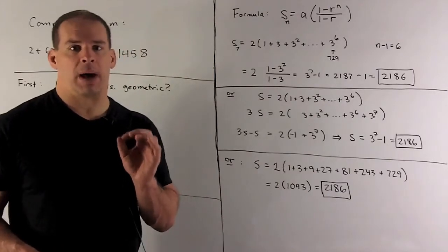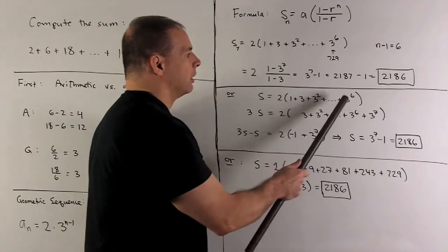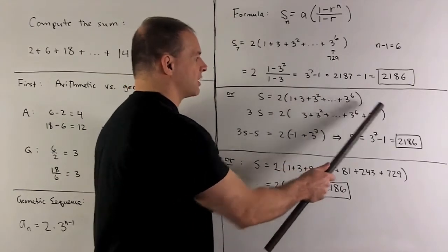So 1 goes to 3, 3 goes to 3 squared, and so on. 3 to the 6th goes to 3 to the 7th.